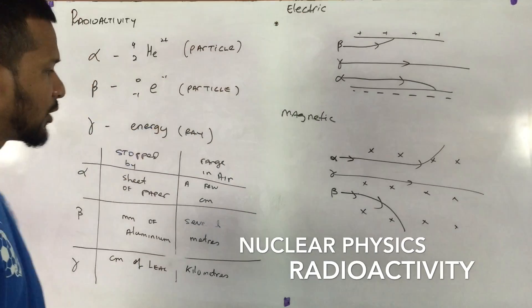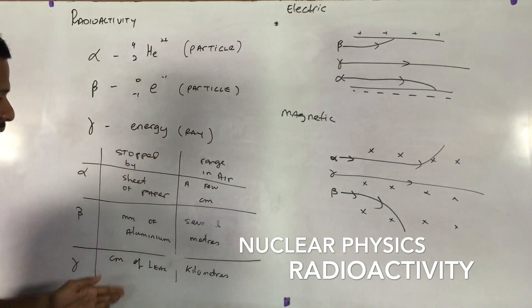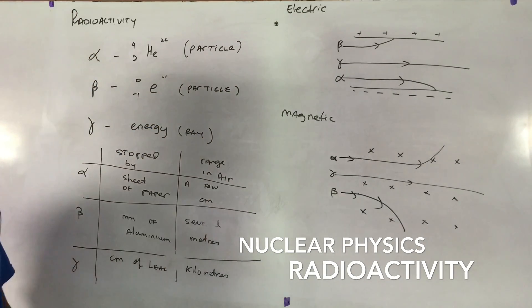Follow that. So that's the behavior of alpha, beta and gamma in a magnetic field. Alpha, beta and gamma in an electric field. What is stopped by and range in air.